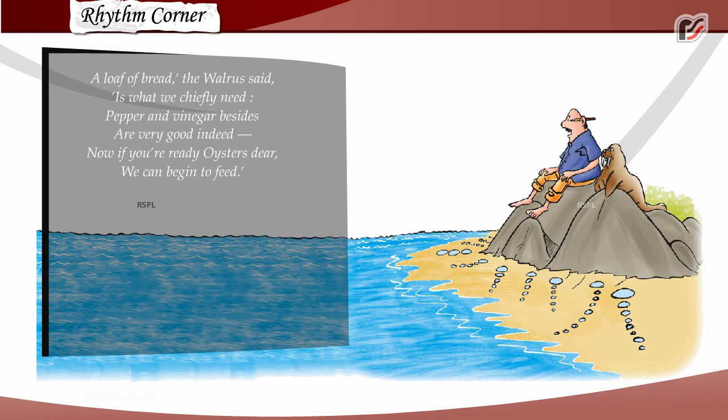A loaf of bread, the walrus said, is what we chiefly need. Pepper and vinegar besides, are very good indeed. Now, if you're ready, oysters dear, we can begin to feed.